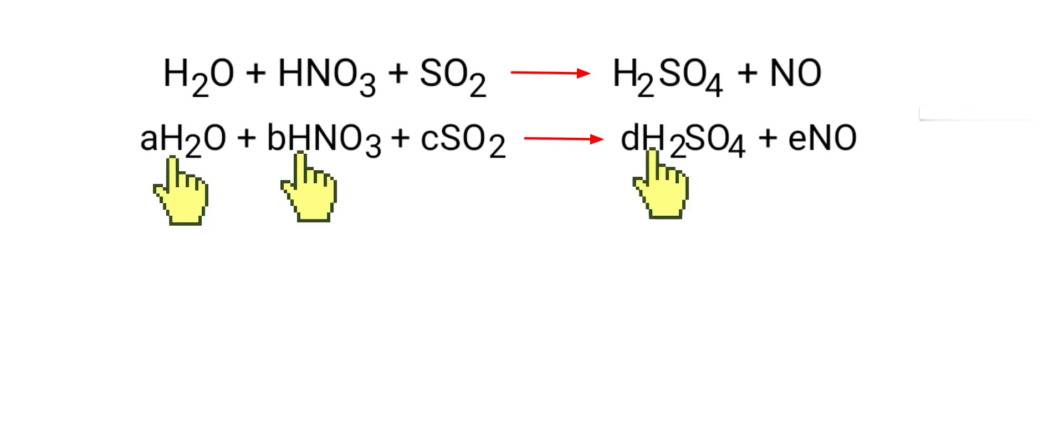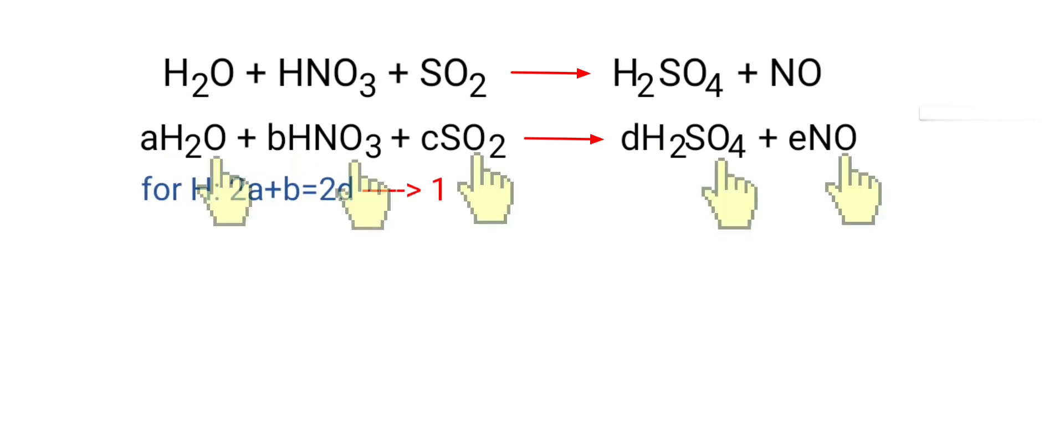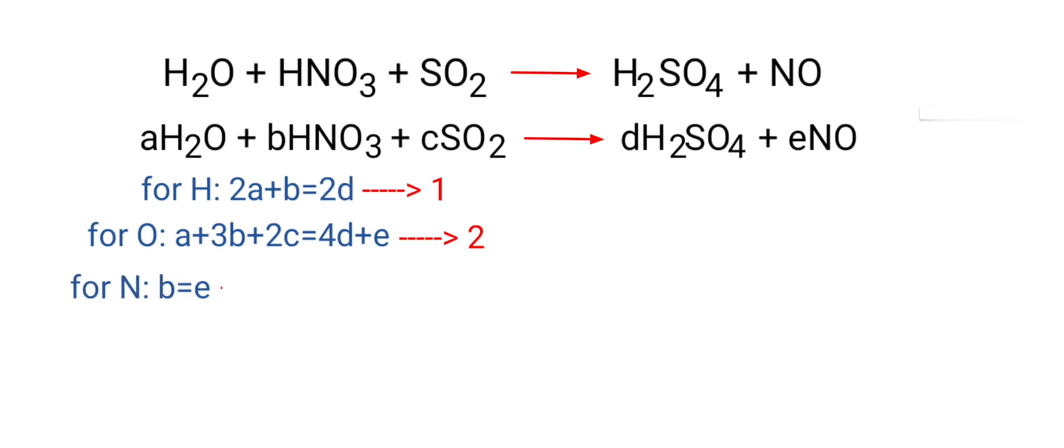For hydrogen, 2A plus B is equal to 2D. For oxygen, A plus 3B plus 2C is equal to 4D plus E. For nitrogen, B is equal to E. For sulfur, C is equal to D.